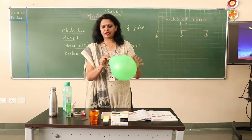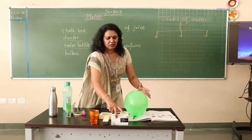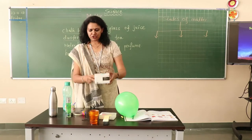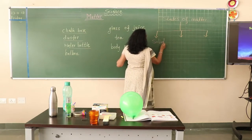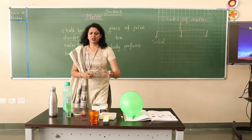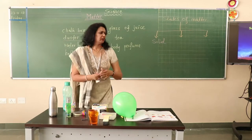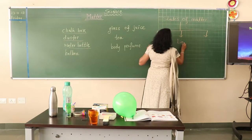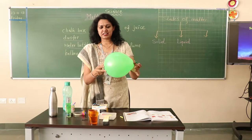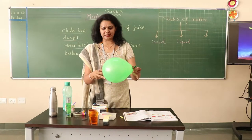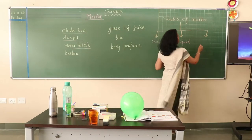A balloon which is inflated has something inside it. Every solid — a specific shape and weight object — is known as solid. The things which can be poured or can be spilled are known as liquid. And the thing which is inside the balloon but we are not able to see it — the balloon is blown because of air.